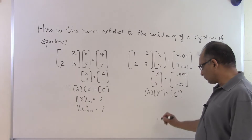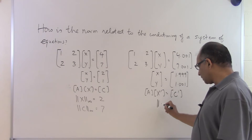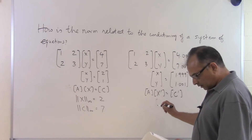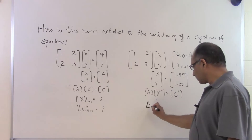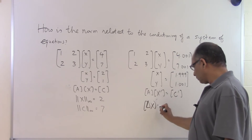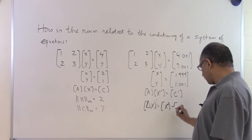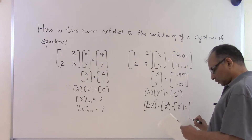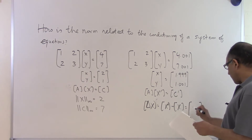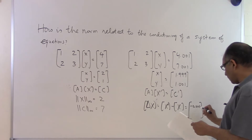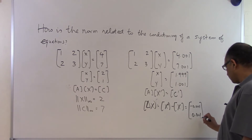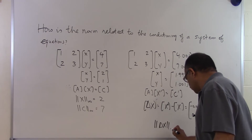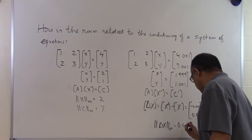A is staying the same; we are keeping the coefficient matrix unchanged. We calculate delta X, which equals X prime minus X. In this case that is [-0.001, 0.001], and the norm of delta X turns out to be equal to 0.001.